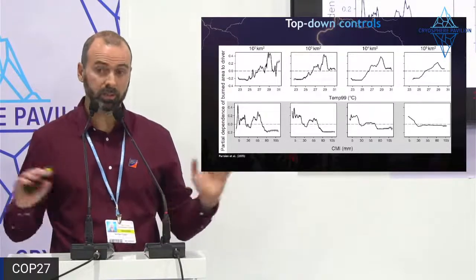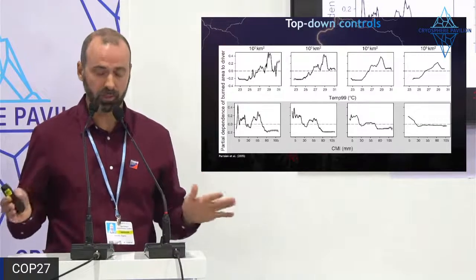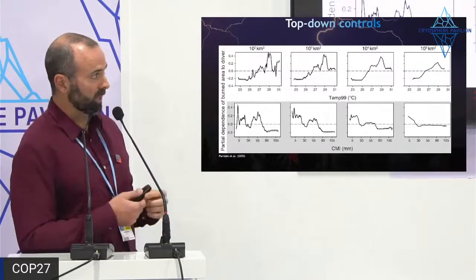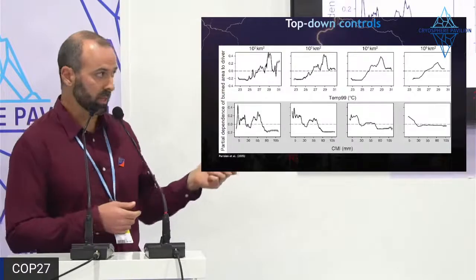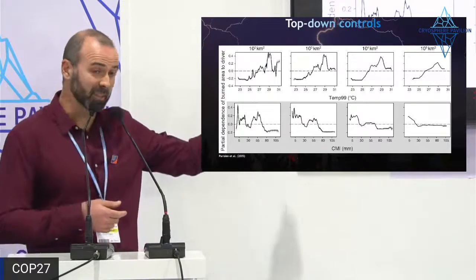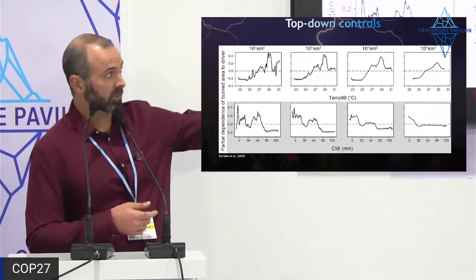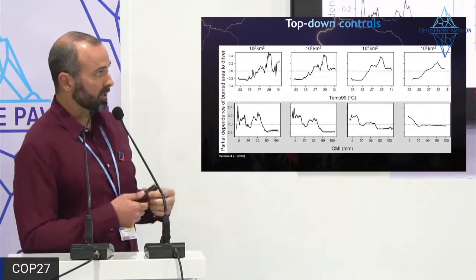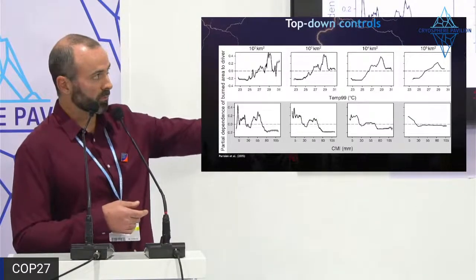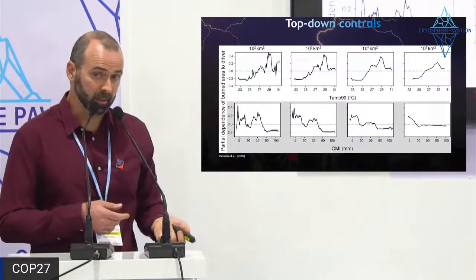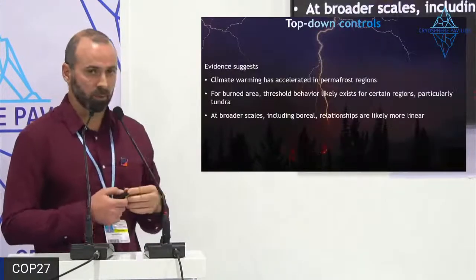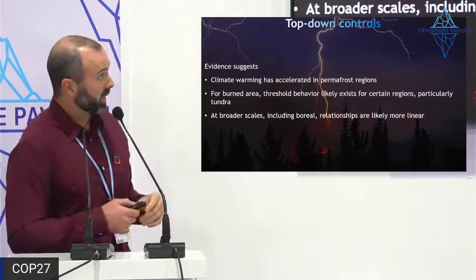However, stepping back: most fires in the permafrost region occur in boreal forests, not tundra. If we look at the response of boreal forest fires to climate — across all of Canada with temperature on top and climate moisture index on the bottom at different scales ranging from about 100 to hundreds of thousands of square kilometers — this actually looks quite linear. The response of boreal fires to these meteorological drivers looks quite linear, which is consistent with a lot of other papers.